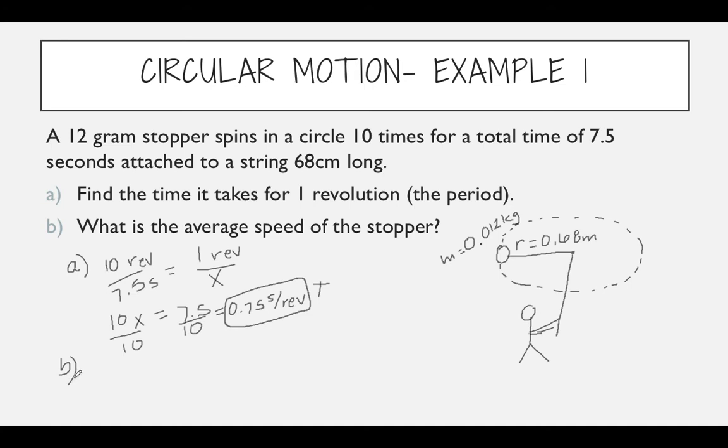For part B, what is the average speed of the stopper? So for average speed, we're looking for the velocity. We want to know what is the velocity of this object. We know that the velocity travels a certain distance one time around in a given time period. So we could use our linear equation, velocity equals distance over time. And our distance traveled is equivalent to the distance around the circle one time, so we know that that's equivalent to the circumference. So 2 pi r. 2 pi times the radius is 0.68 divided by our time. Our time for one revolution was 0.75 seconds. We're in meters per second, which is good. When you go ahead and solve, you should get 5.7 meters per second.